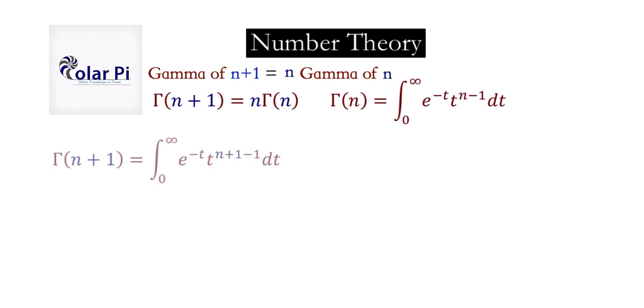Using this definition of gamma of n, gamma of n plus 1 has to look like this. All we've done is replaced this n here with n plus 1, as we should for gamma of n plus 1. In the exponent of t, we have n plus 1 minus 1, which is just n, so what we have reduces simply to this.